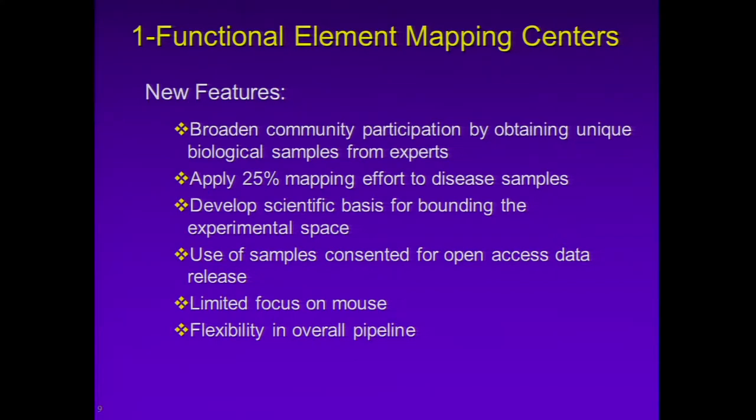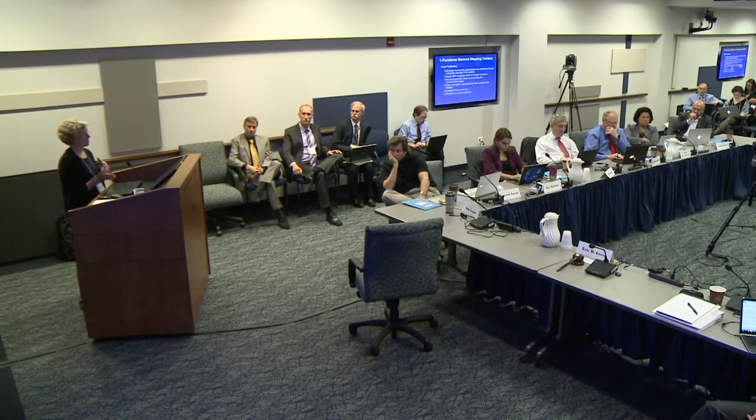There are a couple of new features for these functional element mapping centers. We want to broaden community participation by obtaining unique biological samples from experts — this unbiased data collection for samples not currently in the catalog. These may be of biological focus, such as on the differentiation pathway, or they may be of disease interest. We are proposing to devote approximately 25 percent of the mapping efforts to disease studies. These can be samples from unaffected as well as affected individuals, and we hope to learn something by examining the differences between unaffected and affected tissues and develop a strategy for studying disease using molecular genomic assays more broadly in the future.